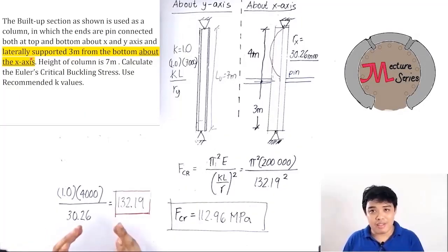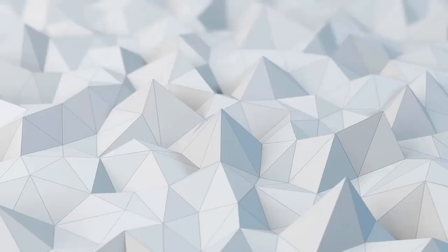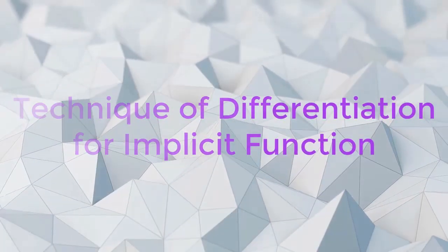Hello, it's me again, Engineer Makalinaw. Last time I told you I'm going to discuss the Euler's critical backing stress for unsymmetrical section. If a certain section is not symmetric, you're going to utilize the product of inertia. But due to the request of my viewers, I'm going to discuss first the technique of differentiation for implicit function.